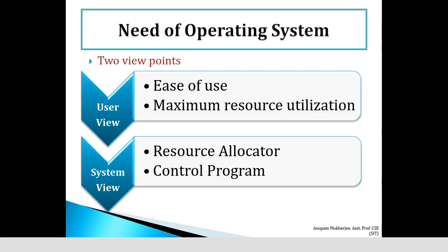Now I may ask you: why do we use an operating system? What are the major goals of an operating system? The primary goal of an operating system is efficiency, and the secondary goal — another important part of a GUI operating system — is convenience, meaning it makes computing easier.